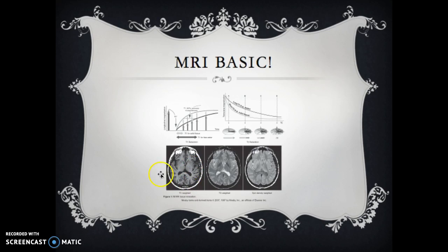A T1 has a TR, and that's repetition time. TR stands for repetition time. The repetition time, the TR, is going to be 400 to about 800 for T1. That is going to give us dark fluid.